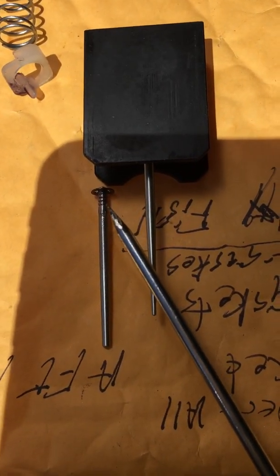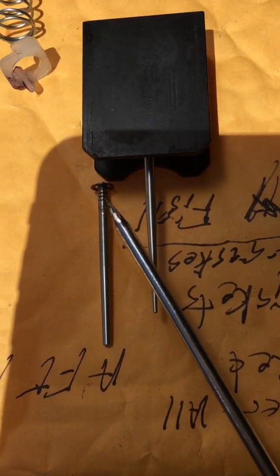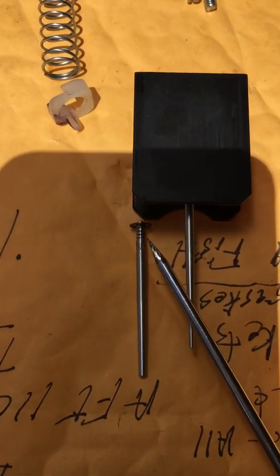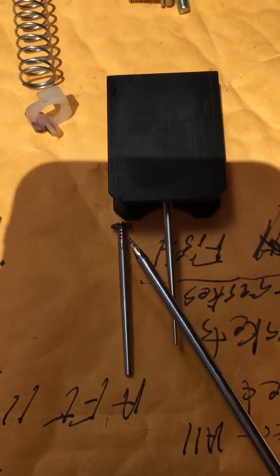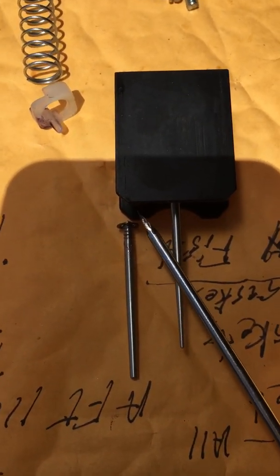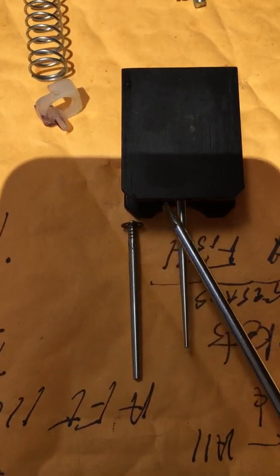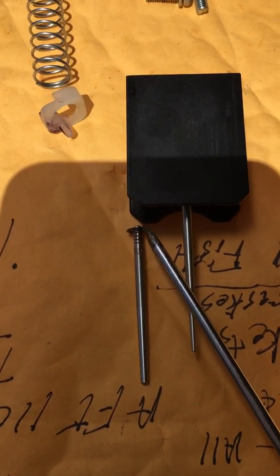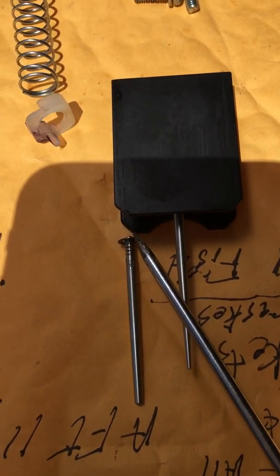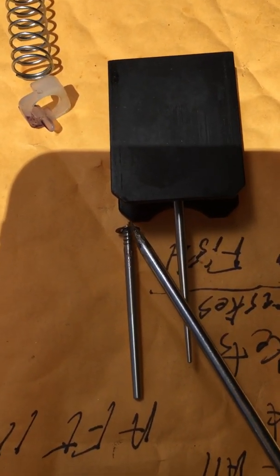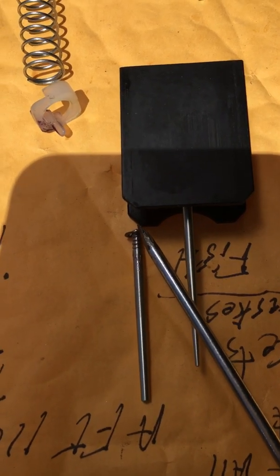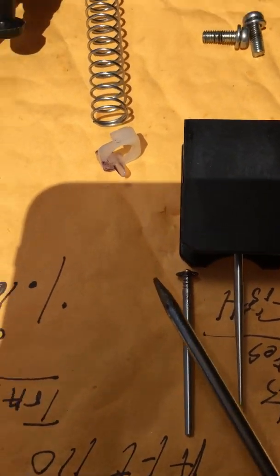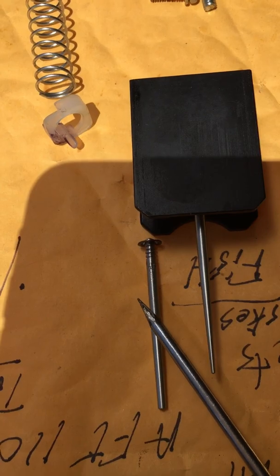After quarter throttle is your needle. You can see there are little grooves on it. Typically they come set on the number four spot — one from the bottom, which is the richest. As you go up the numbers — three, two, one — one is the highest, the top point, which is the leanest. So this needle controls...